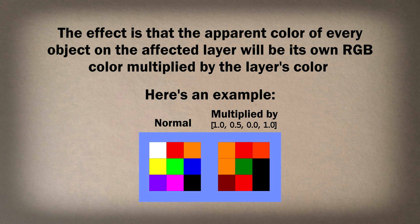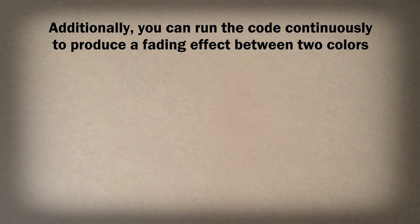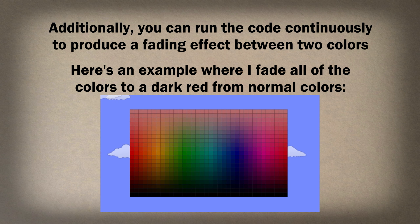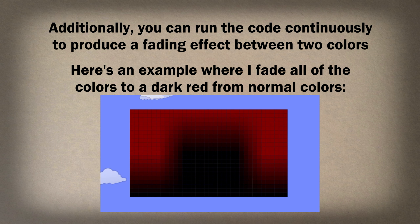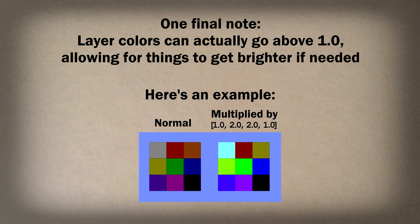The effect is that the apparent color of every object on the layer will be its own RGB color multiplied by the layer's color. Here's an example: on the left we have normal colors, and on the right those colors have been multiplied by orange. As you can see, reds generally stick around while blues disappear entirely. Additionally, you can run the code continuously to produce a fading effect between two colors — here's an example where I fade all of the colors to a dark red. One final note: layer colors can actually go above 1, allowing things to get brighter if needed. On the left we have a bunch of dark colors, but on the right we have those same colors multiplied by 2 in both the blue and green channels, which makes the blues and greens bright but keeps the reds dark.